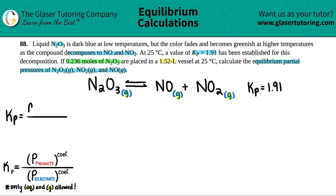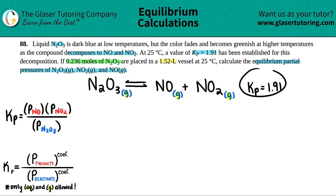Let's write it out. Kp equals the pressure of the two products: the pressure of NO times the pressure of NO2 — they're all raised to the first power since there are no coefficients in front of them — divided by the pressure of N2O3. We already know that Kp is 1.91.